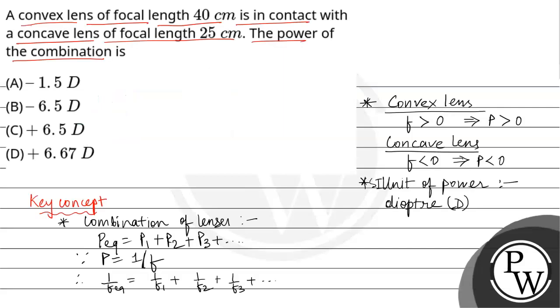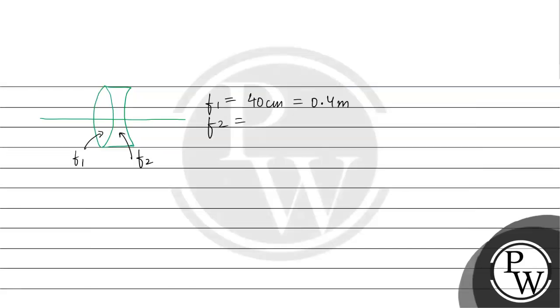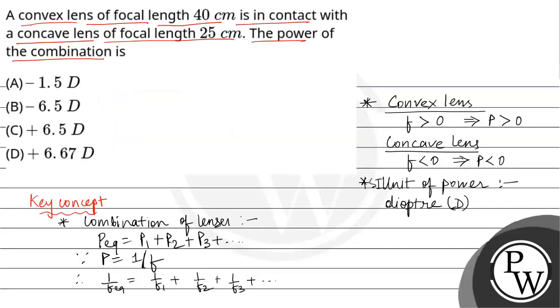And for concave lens, focal length is 25 cm. 25 will be negative because it is a concave lens. So minus 0.25. Now we have to find the power of the combination.